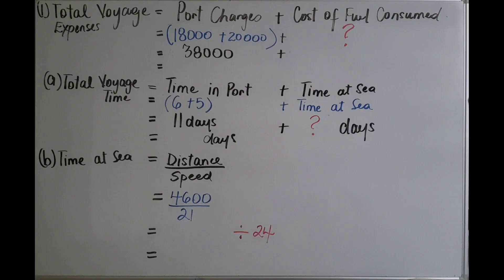Step one: we're going to calculate the total voyage expense, which is port charges plus the cost of fuel consumed. We don't know what the cost of fuel consumed is, so we need to find that out. In order to do so, we have to find the total voyage time, the time at sea, the cost of fuel consumed, and the quantity of each fuel consumed.